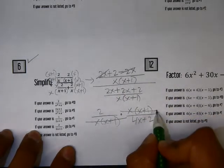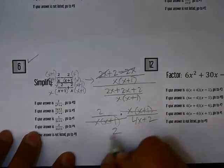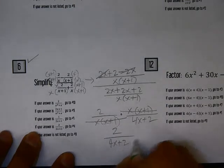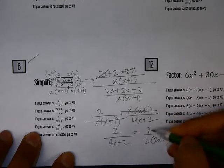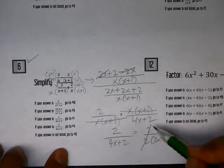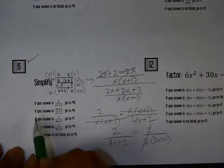The x and the x and the x plus 1 cancel out, so I'm left with 2 over 4x plus 2. I can factor the denominator, and then we see that the 2's cancel, so we're left with 1 over 2x plus 1.